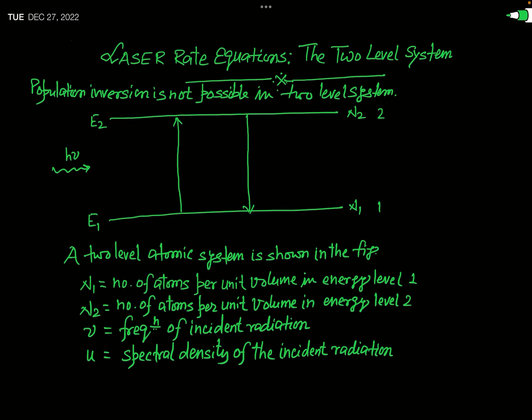First of all we will discuss the two-level system. The aim of this discussion is to explain that population inversion is not possible in a two-level system. This is a very important fact — population inversion cannot be achieved in a two-level system, but it is possible in the case of a three-level or four-level system.